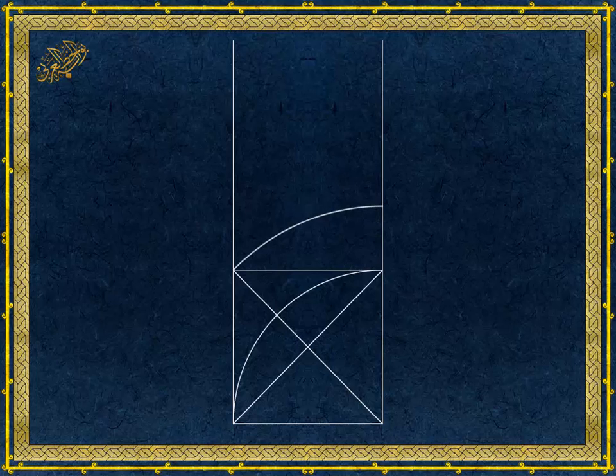Now we have two options. The first option is to draw exactly the same arc, but centered at the other corner, and by connecting the intersecting points of the arc, we get a primary rectangle. In other words, we get a root 2 rectangle.